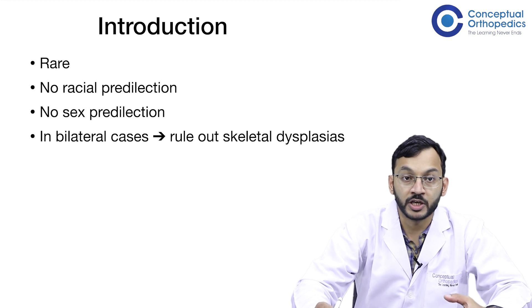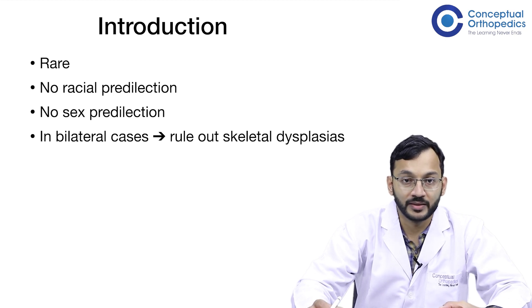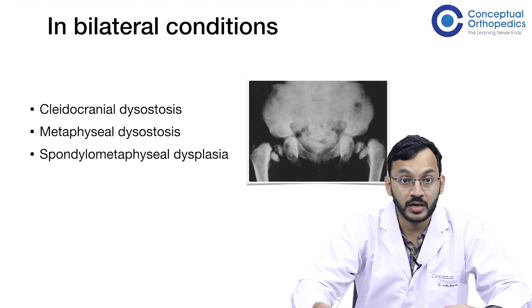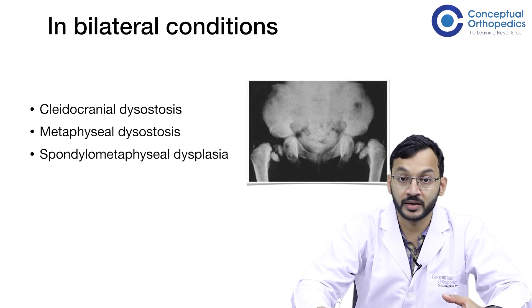Congenital coxa vera is a very rare condition. There are no racial or sex predilections. However, in bilateral cases it is always important to rule out skeletal dysplasias — specifically cleidocranial dysostosis, metaphyseal dysostosis, and spondylometaphyseal dysplasia, as well as other uncommon dysplasias.